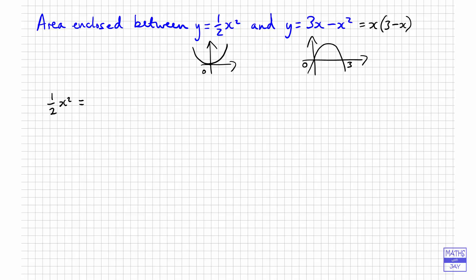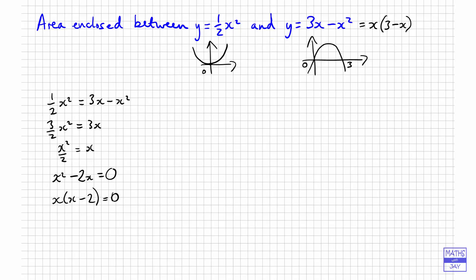So half x-squared equals 3x minus x-squared — that gives us the two points where the curves meet. Adding x-squared to both sides gives us 3 over 2 x-squared on the left. Dividing through and rearranging, we get x-squared minus 2x equals 0. Solving this quadratic gives us x equals 0 or x equals 2.